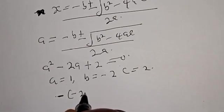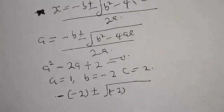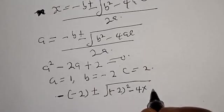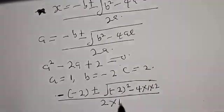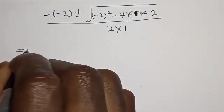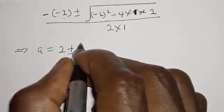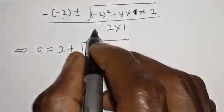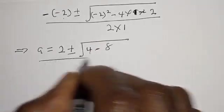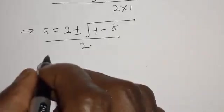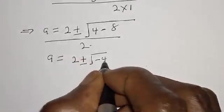We get minus into minus 2, plus or minus square root of minus 2 squared minus 4 multiplied by 1 multiplied by 2, over 2 multiplied by 1. That gives us 2 plus or minus square root of 4 minus 8, over 2. So a is equal to 2 plus or minus square root of minus 4, over 2.